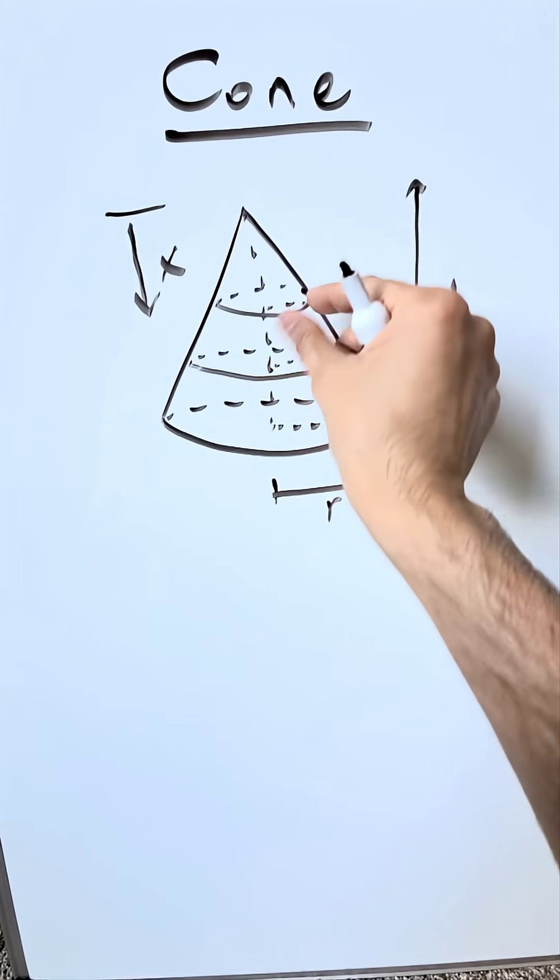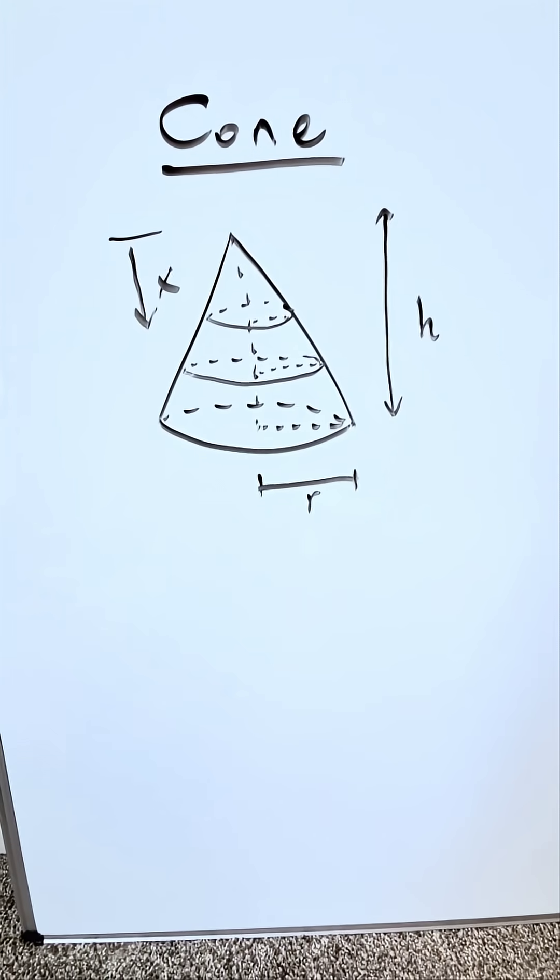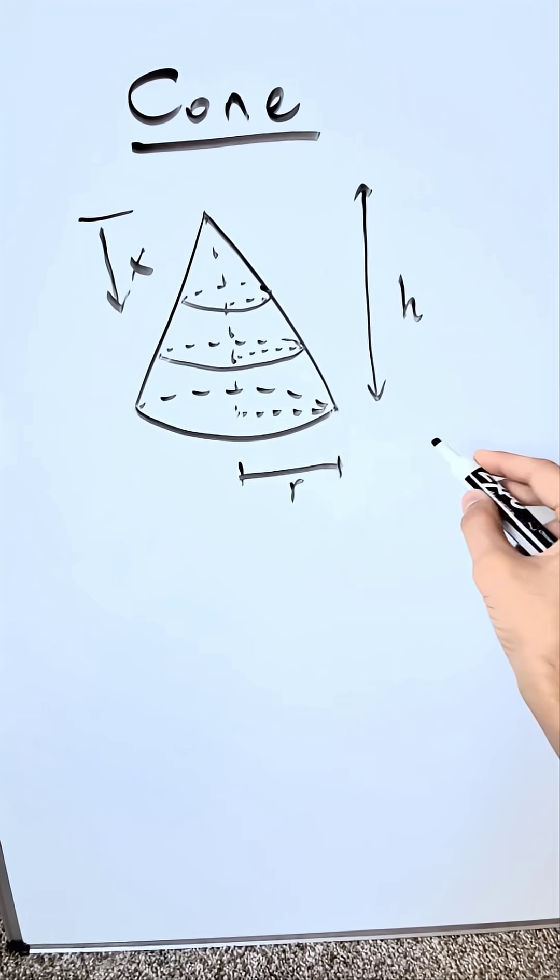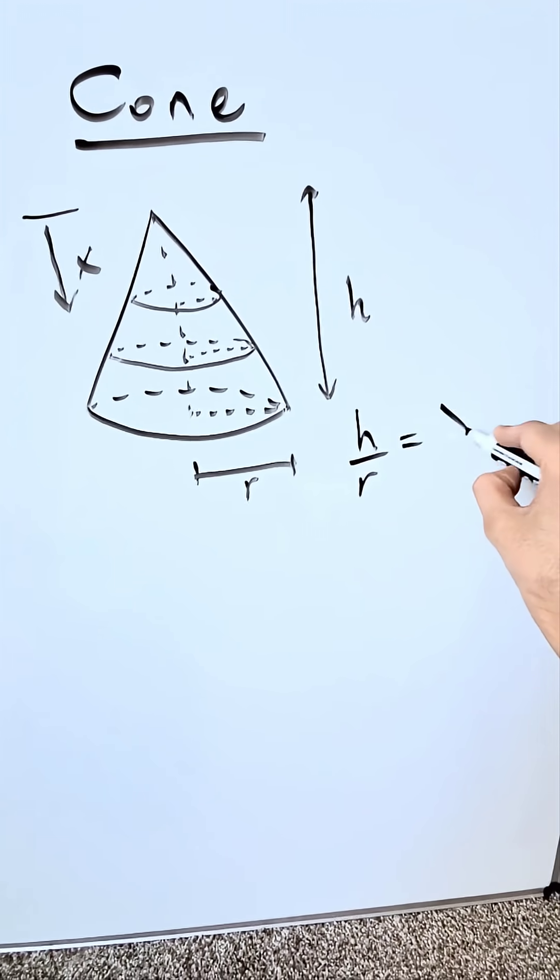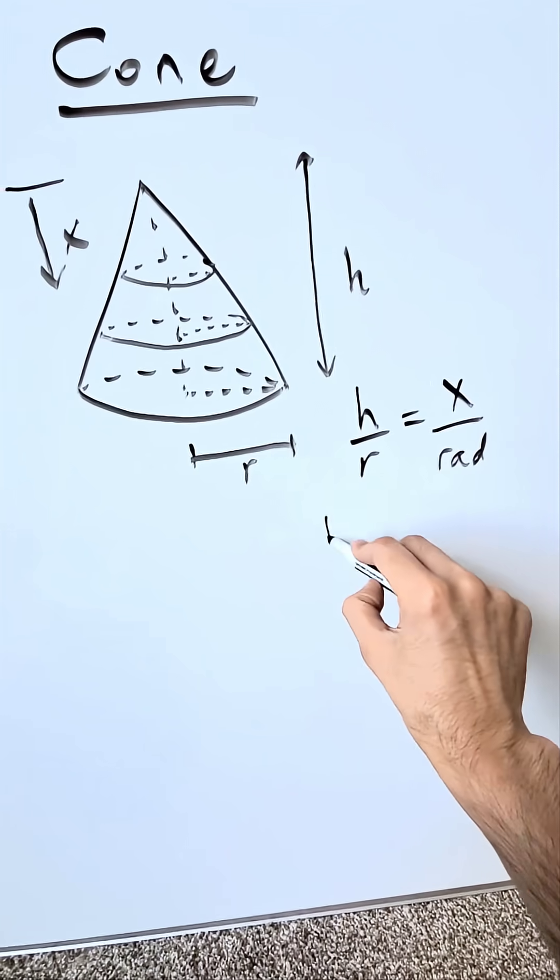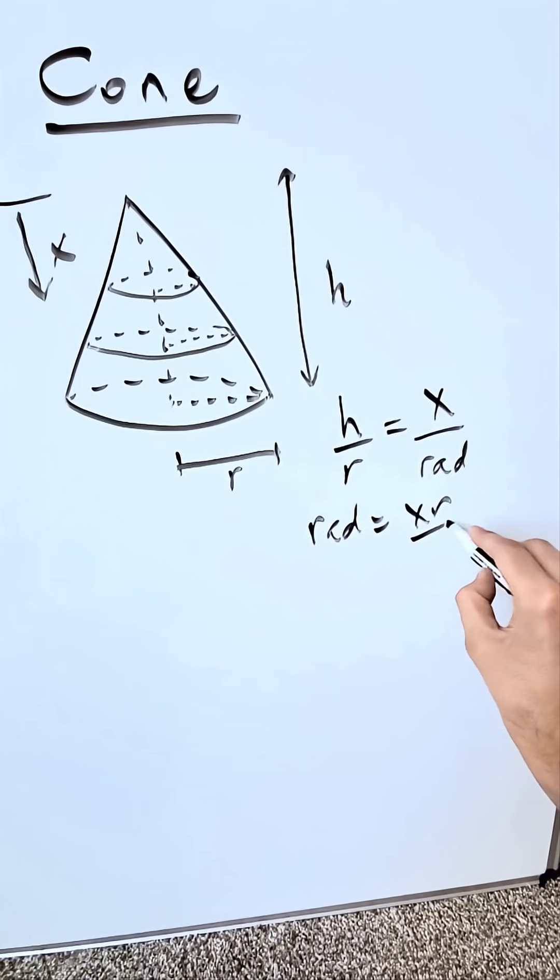Everything is broad here and everything converges and becomes narrow towards the tip or the apex. Obviously the radii and the slices are smaller at the top. You have a ratio which develops: maximum height divided by maximum radius is equal to a partial height divided by the radius at that height and you solve for this. Your radius at a particular point x is equal to xr over h.